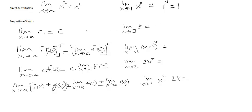For the next property, we have the limit as x approaches a of c, where c is a constant. When you take the limit as x approaches any number of a constant, it outputs the constant. Here I have the limit as x approaches 3 of the function 5, so the limit is 5.